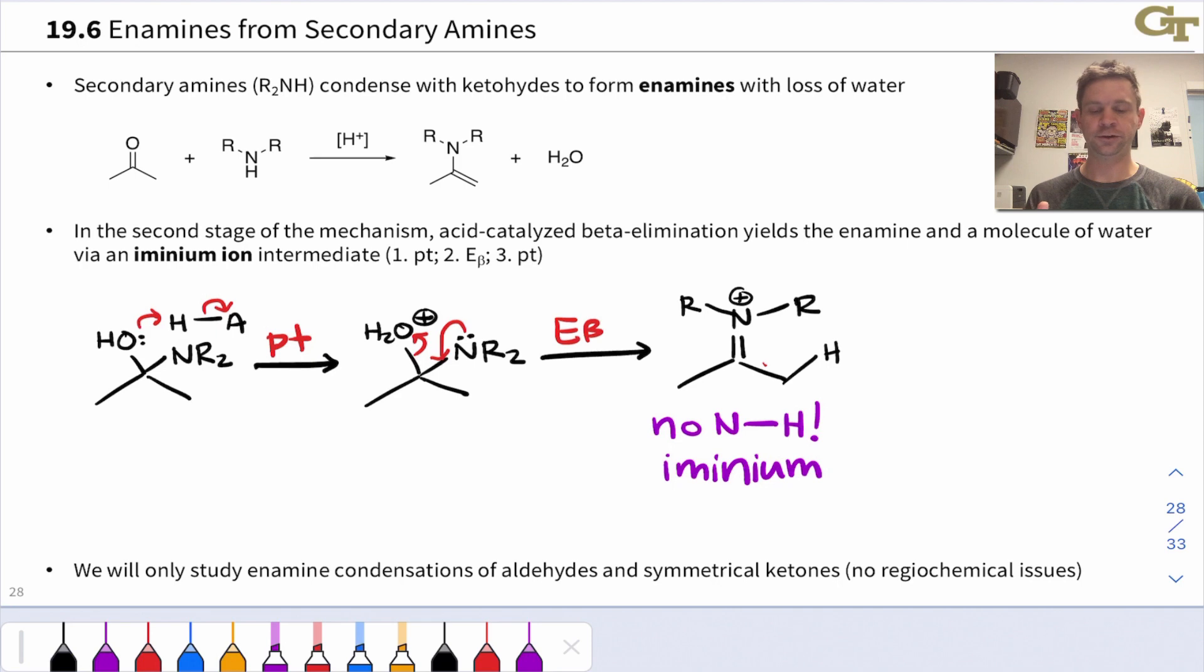Now the resulting structure here is known as an iminium ion. It's the conjugate acid of an imine is one way to think about this. But this particular type of iminium ion is interesting because there's no NH in this structure. There's no proton we can remove from the nitrogen to get a neutral imine.